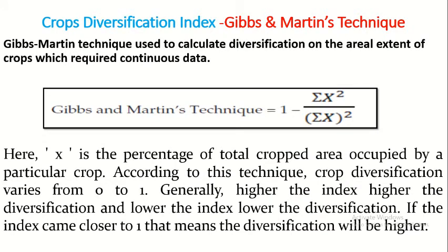According to Gibbs and Martin's technique, the crop diversification index is: 1 minus (sum of x² divided by sum x²), where x is the area of a particular crop cultivated in a certain areal unit. According to this technique, crop diversification varies from 0 to 1. A value of 0 means diversification is nil — if any area is only under monocropping, the value will be 0. But if maximum crops are cultivated, it will approach 1.